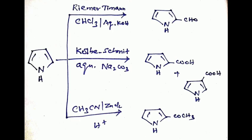In Riemann-Tiemann reaction, pyrrole combined with chloroform in aqueous potassium hydroxide to form pyrrole-2-aldehyde. In Gattermann-Koch reaction, pyrrole combined with aqueous sodium carbonate to form pyrrole-2-aldehyde. From pyrrole-2-aldehyde we get two products: the second carboxylic acid product is major and third carboxylic acid product is minor.